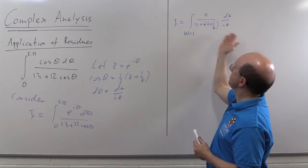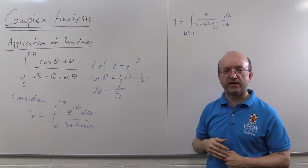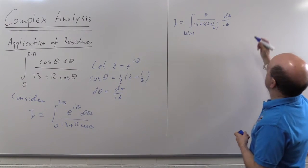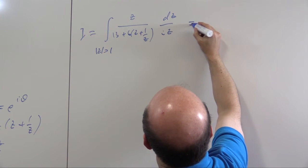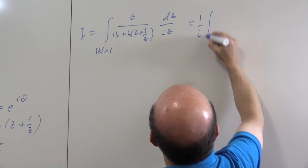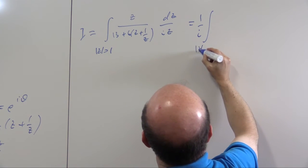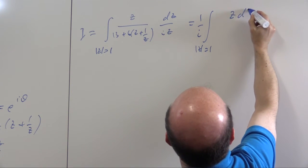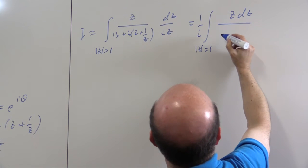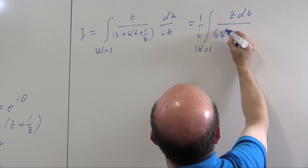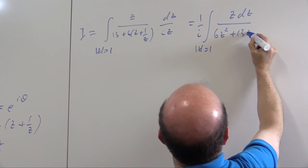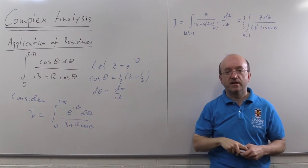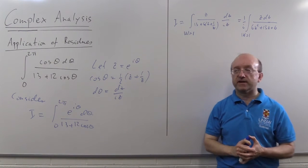And my advice to you in doing these is don't try and do all the algebra in your head at once, just write down what you've got and then simplify. I'm going to actually take this factor of i at the front, and I'm going to get the integral around the unit circle. What do I get? I get z over z over, and I will have 6 z squared plus 13 z plus 6.